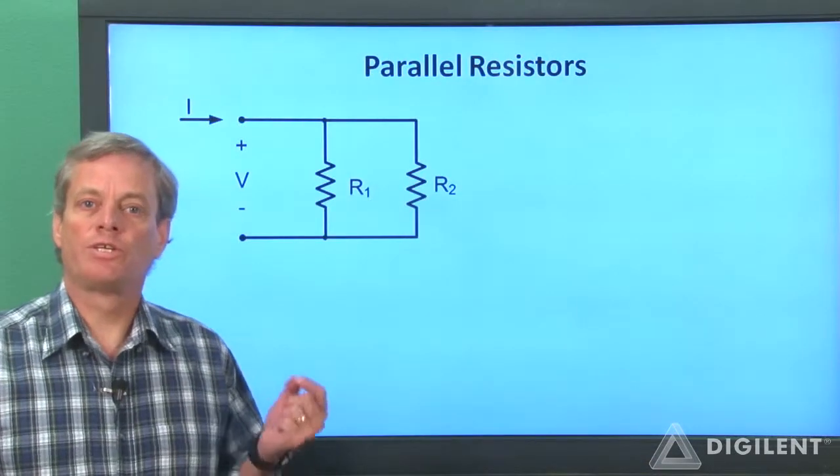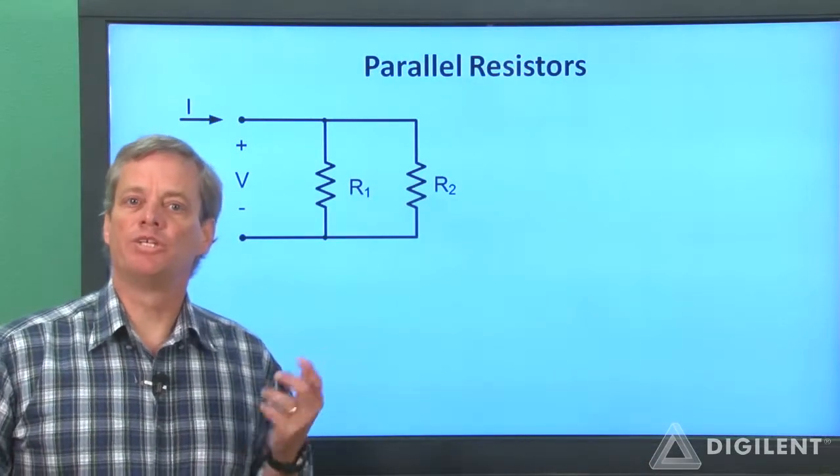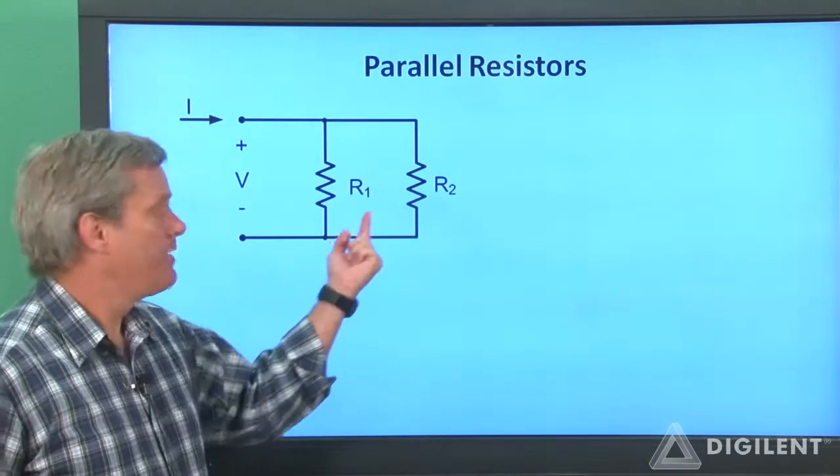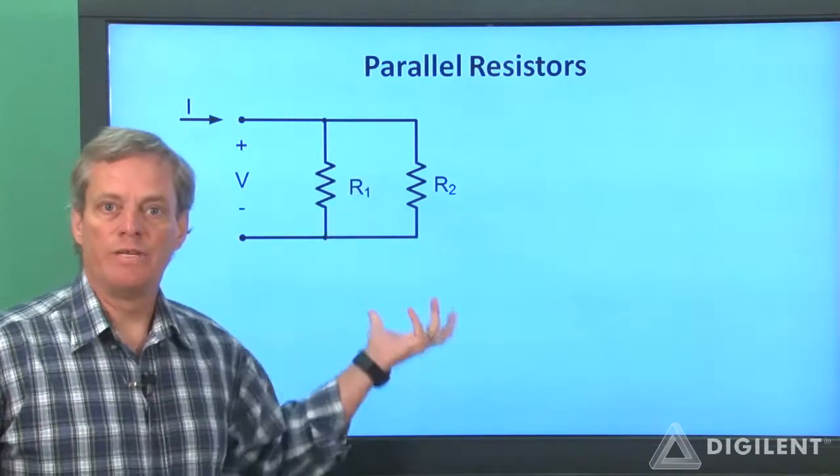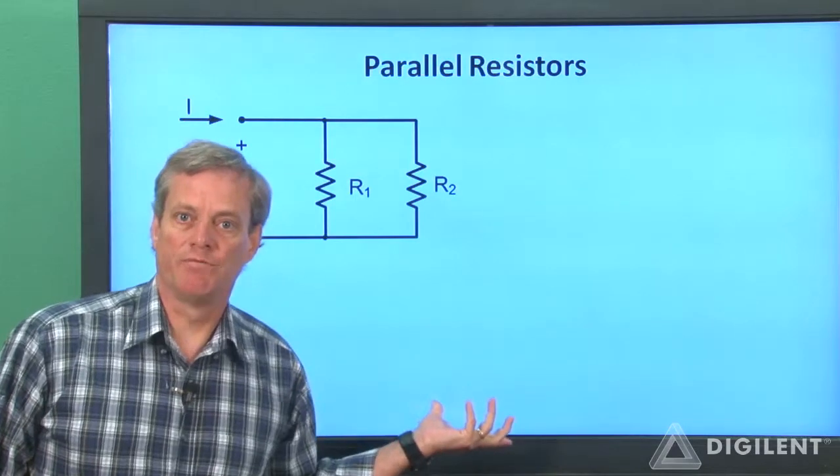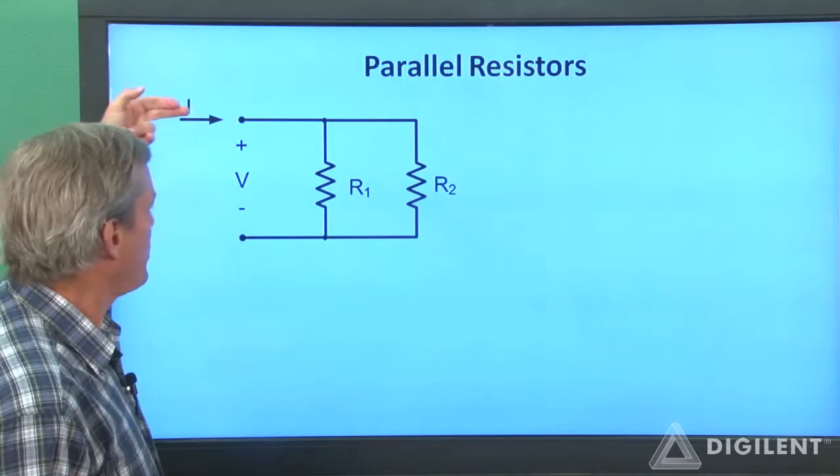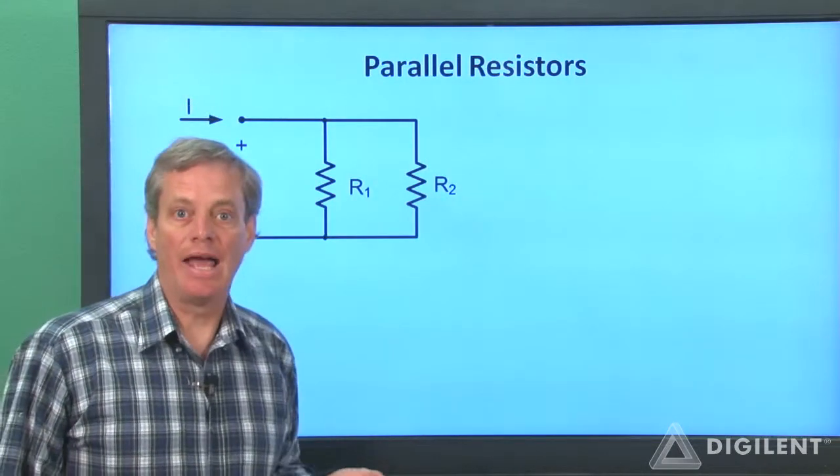Now let's narrow our focus to just looking at parallel combinations of resistors. These two resistors are in parallel. If we do KVL around this loop, we see that they both share the same voltage difference. We've defined the voltage across both resistors as V and the total current into the combination as I.